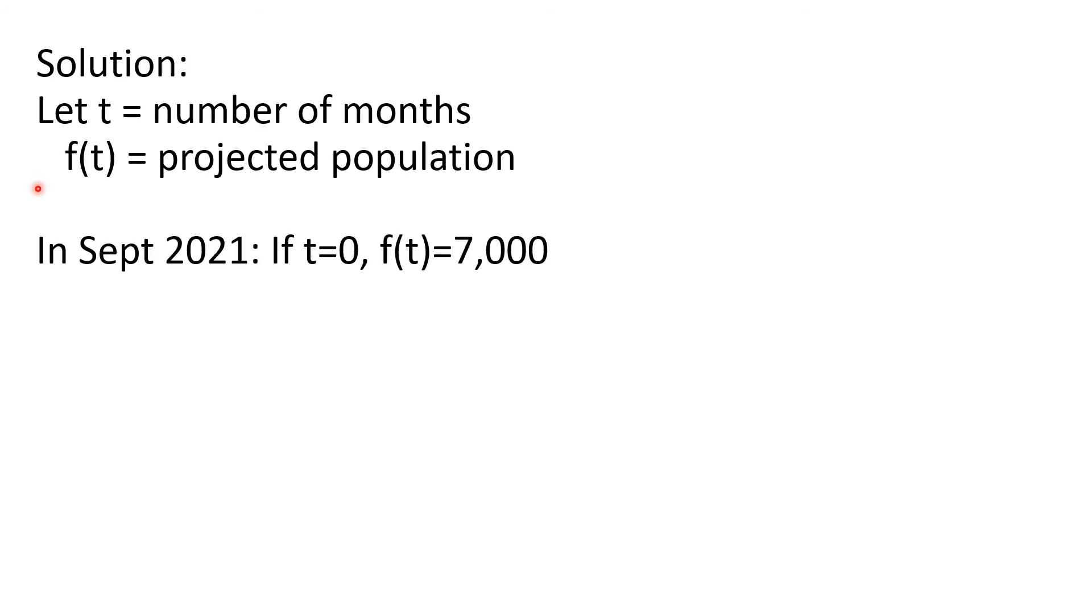Let us have the solution. Let T be the number of months and F of T be the projected population. So in the beginning, in September 2021, when T is equal to 0, F of T is 7,000, the projected population.